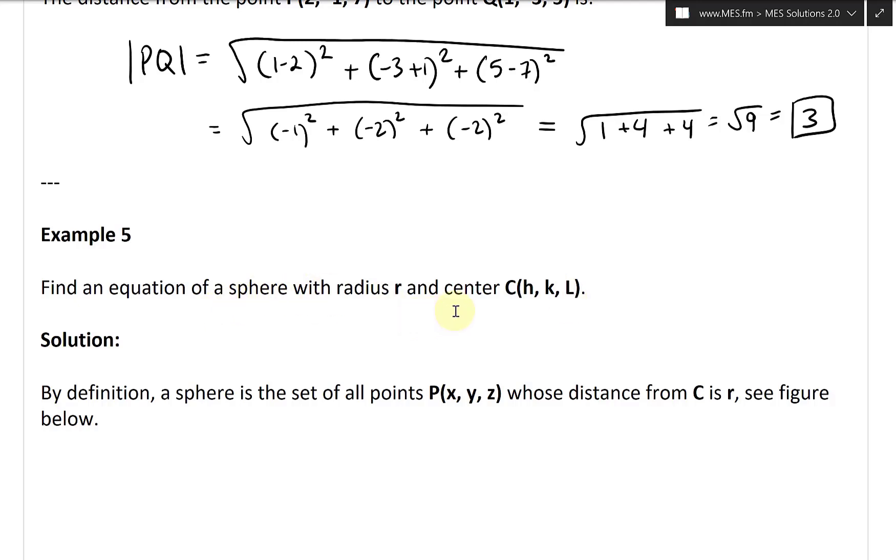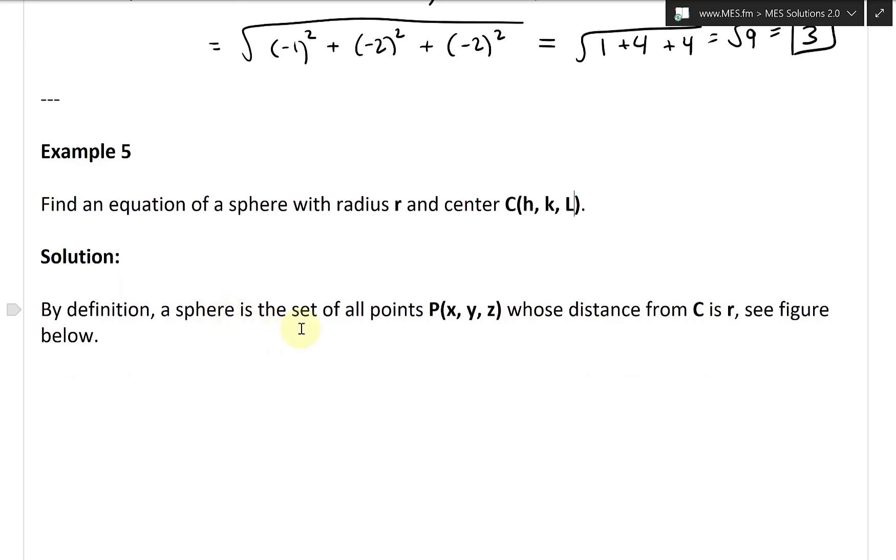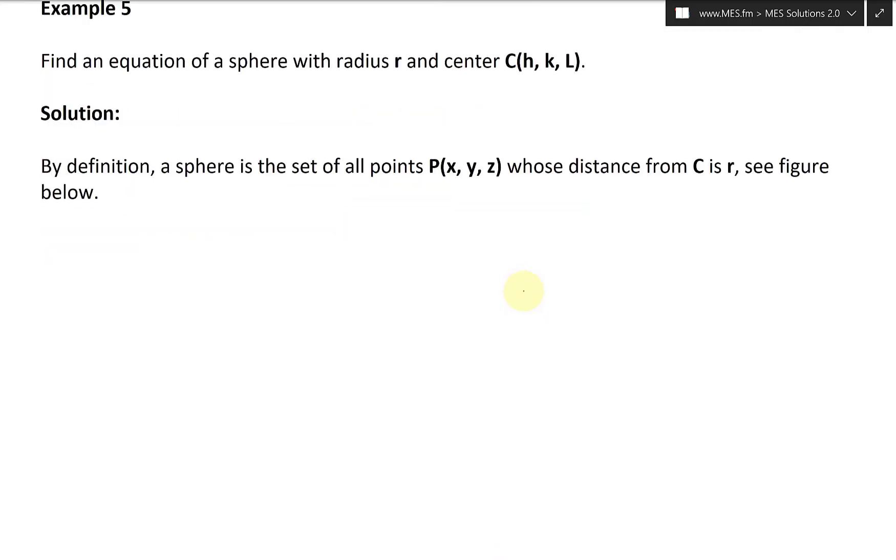So find an equation of a sphere with radius R and center C, which has coordinates H, K, and L. Solution: by definition, a sphere is a set of all points P(x, y, z) whose distance from C is R. You can see the figure below, so let's just draw this in 3D.